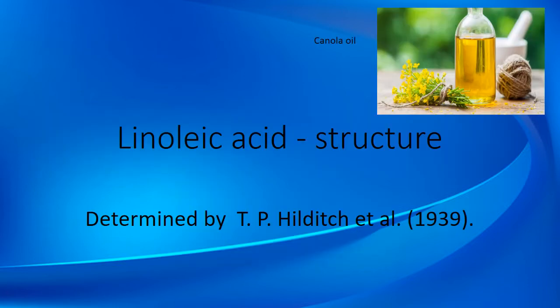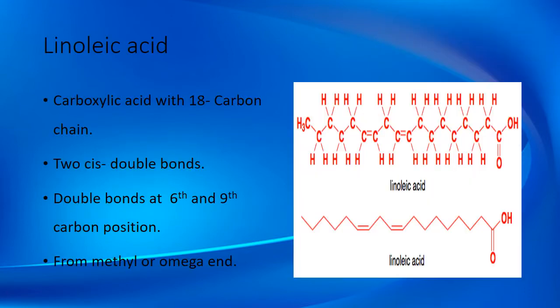The structure of linoleic acid was determined by T.P. Hilditch and others in 1939. It is a carboxylic acid with an 18-carbon chain. It has two double bonds, and those double bonds are present at the 6 and 9 carbon positions from the omega end.